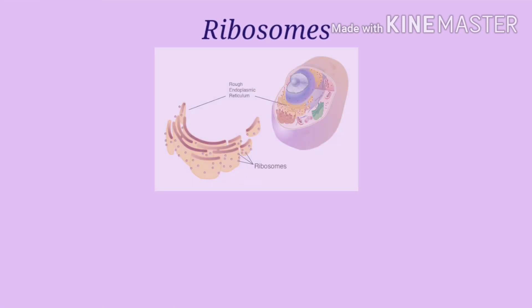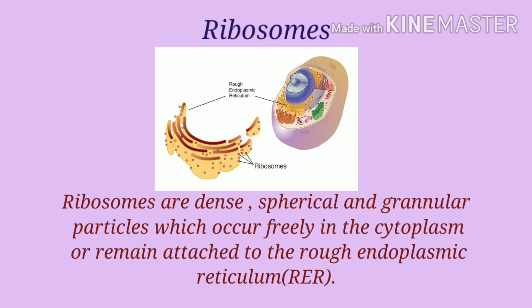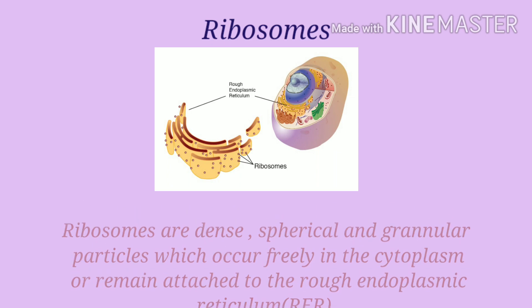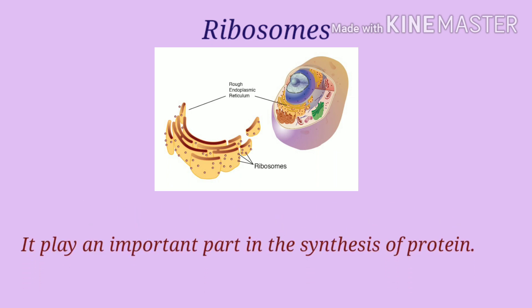Therefore, lysosomes are also called the suicide bags of the cell. Next one is ribosomes. Ribosomes are dense, spherical and granular particles which occur freely in the cytoplasm or remain attached to the endoplasmic reticulum, specially rough endoplasmic reticulum. It plays an important part in the synthesis of protein.